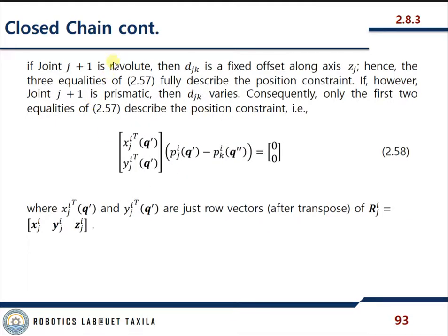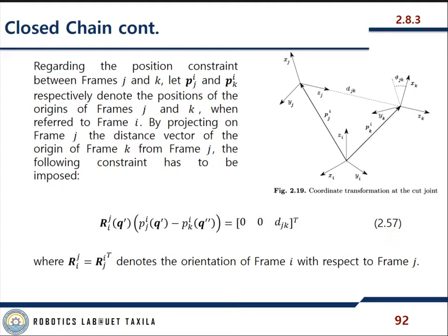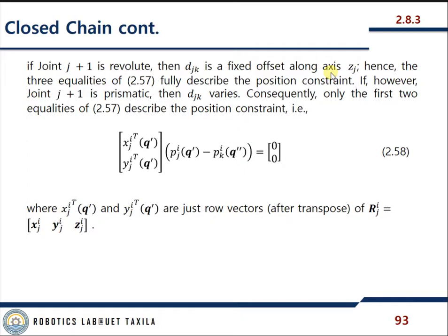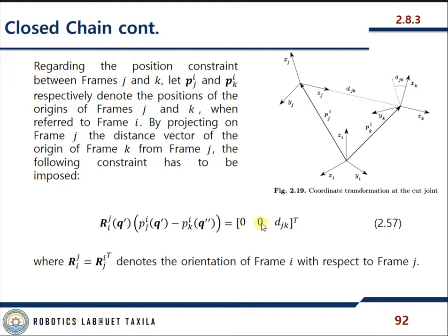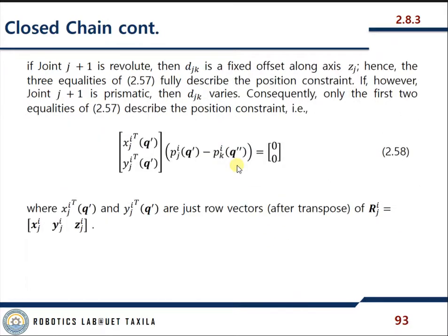If joint j+1 is revolute, then d_jk is a fixed offset along axis z_j, and all three equalities of constraint 2.57 fully describe the position constraint. If joint j+1 is prismatic, then d_jk varies, and consequently only the first two equalities of 2.57 describe the position constraint.